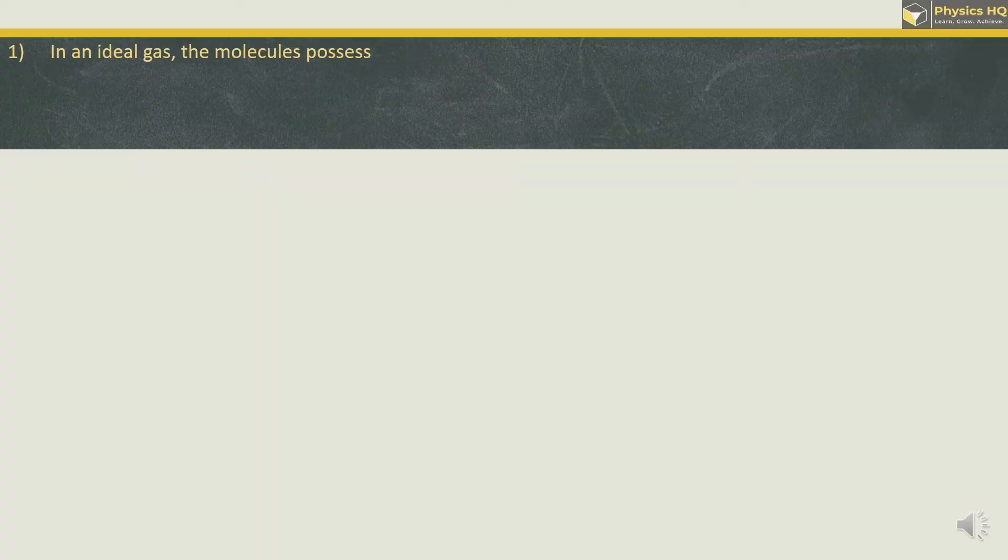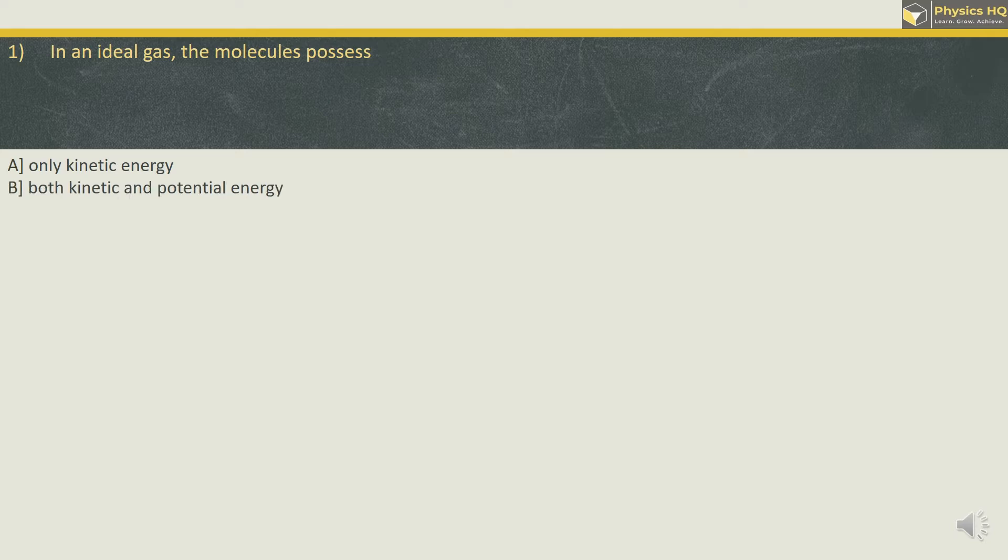Let us start. In an ideal gas, the molecules possess only kinetic energy, both kinetic and potential energy, only potential energy, or neither kinetic nor potential energy. A molecule of an ideal gas is an ideal particle which has only mass and velocity. Therefore, with velocity, we have kinetic energy because kinetic energy formula is half mv square. Therefore, the particle has only kinetic energy.